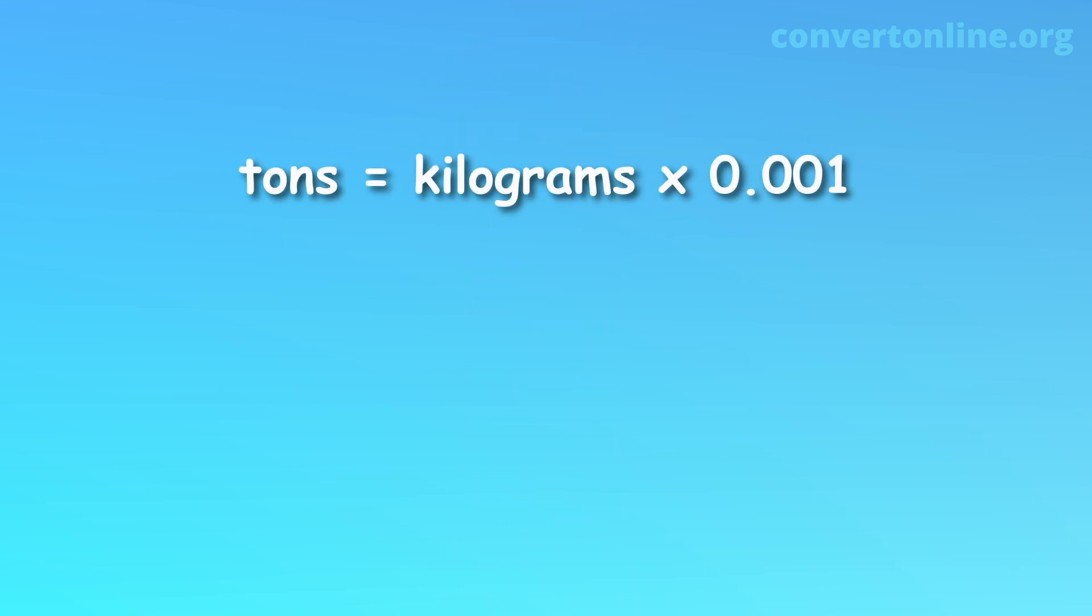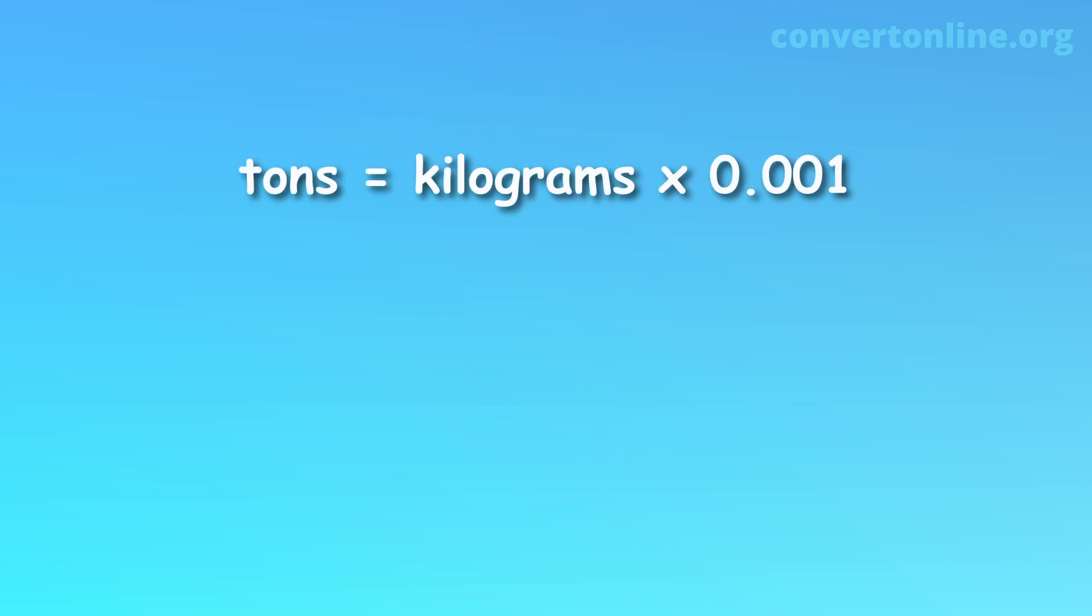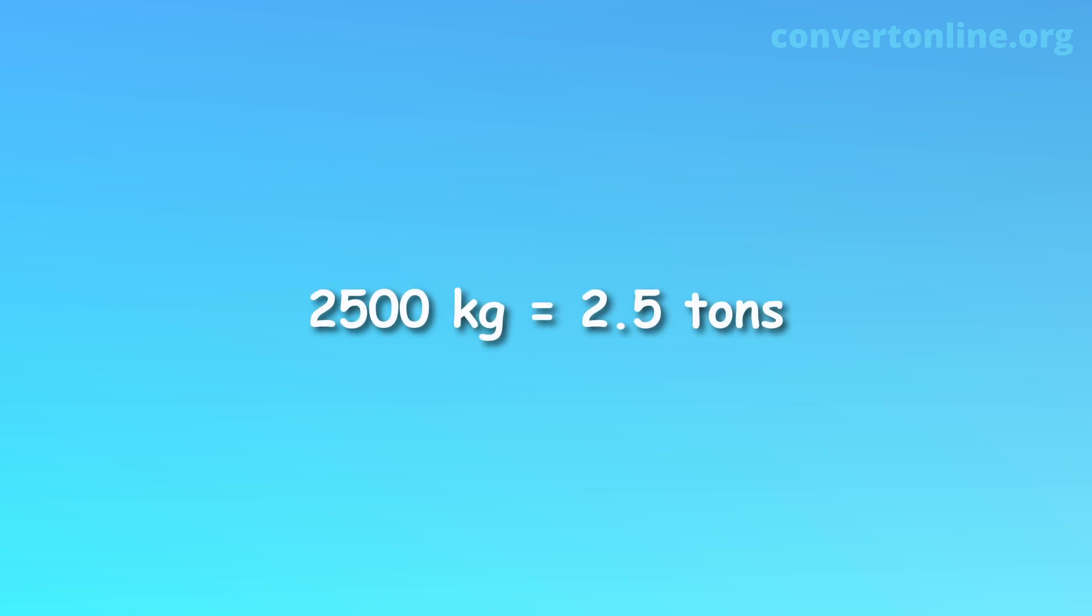Use the conversion formula and substitute number of kilograms with 2,500. Solve the right-hand side value. It becomes 2.5. Therefore, 2,500 kilograms is equal to 2.5 tons.